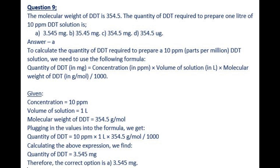To calculate the quantity of DDT required to prepare a 10 ppm (parts per million) DDT solution, we use the formula: Quantity of DDT (mg) = concentration (ppm) × volume of solution (L) × molecular weight of DDT (g/mol) ÷ 1000. Given concentration = 10 ppm and volume = 1 litre, substituting the values: Quantity of DDT = 10 × 1 × 354.5 ÷ 1000 = 3.545 mg. Therefore, the correct option is (a) 3.545 mg.